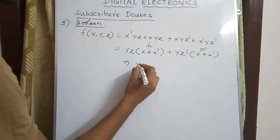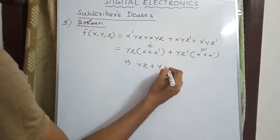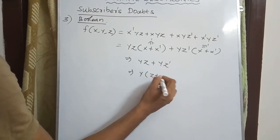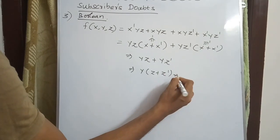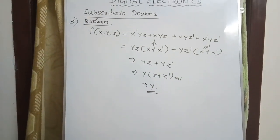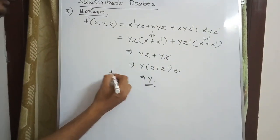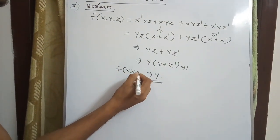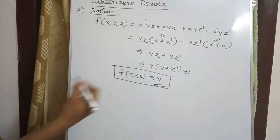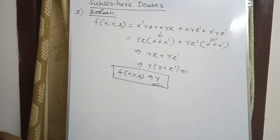So yz plus yz', then z plus z' equals one, giving y times one. The Boolean algebra result is F(x, y, z) equals y. Now let's use K-map as the second method.